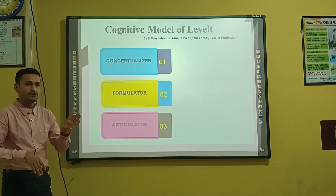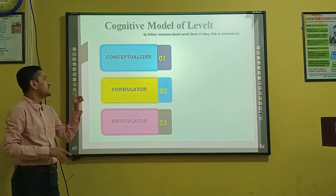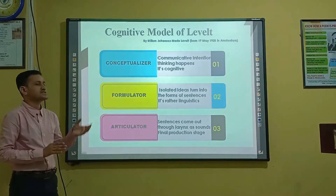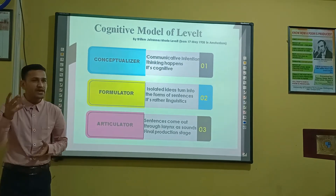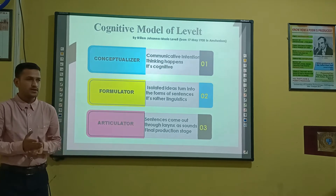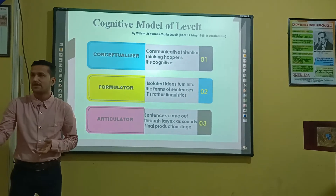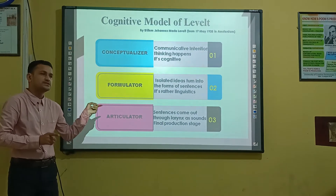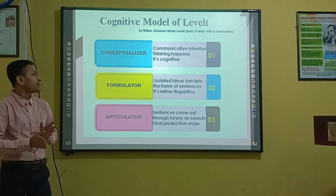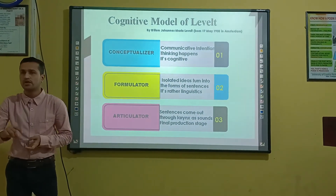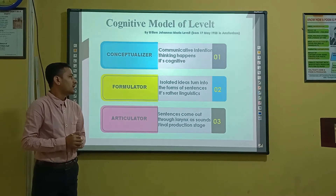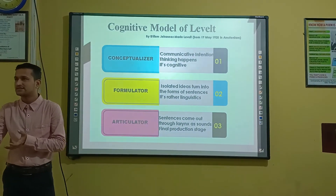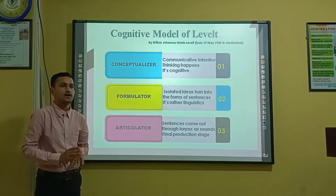There are three layers in the Blueprint. The first one is the conceptualizer, the second one is the formulator, and the third one is the articulator. The conceptualizer is mainly a psychological property — whenever we are asked to say something, thinking happens first in our mind, so this is psychological. The formulator turns isolated ideas into sentences, and since it formulates sentences, this is basically a psycholinguistic layer.